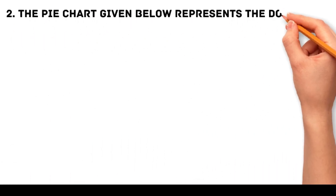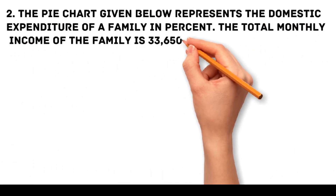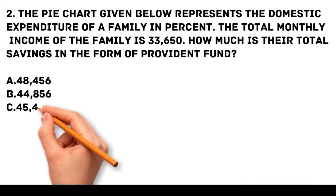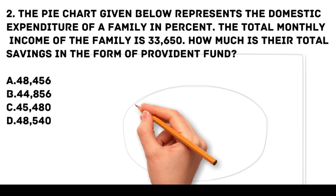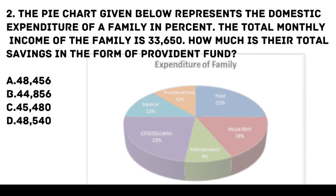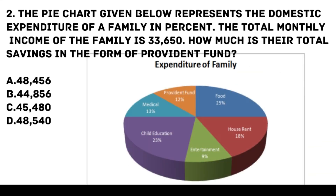Problem 2: The pie chart given below represents the domestic expenditure of a family in percent. The total monthly income of the family is 33,650 pesos. How much is their total savings in the form of provident fund? Options: a. 48,456 pesos, b. 44,856 pesos, c. 45,480 pesos, d. 48,540 pesos.